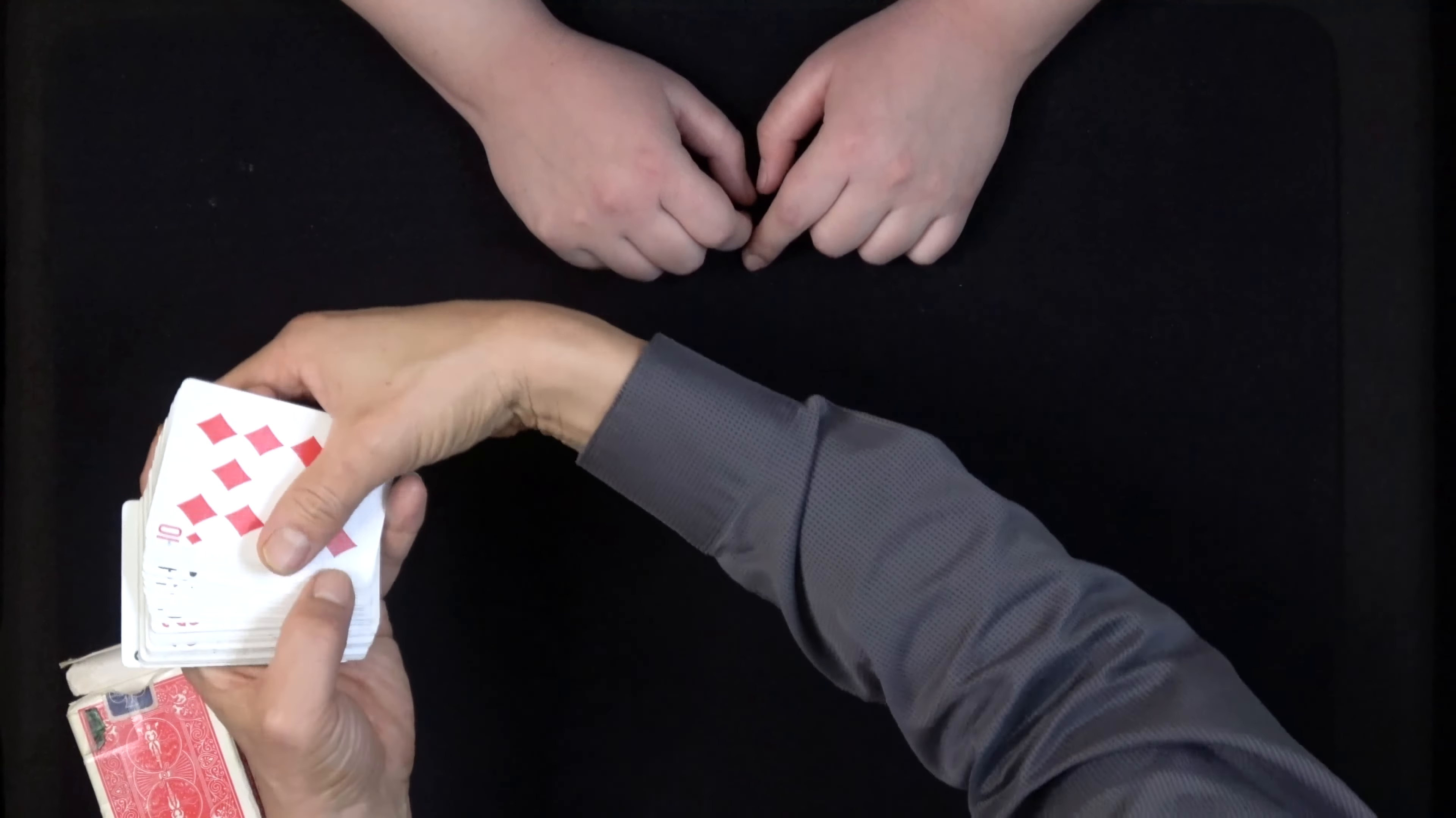We're going to go through the cards and it was seven of hearts, right? We'll look for the seven of hearts. Let me know when you see it because if I've done this correctly, the seven of hearts has vanished from the deck.